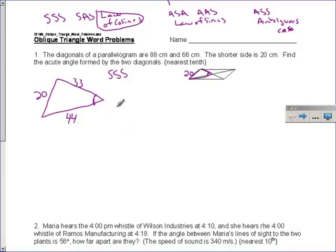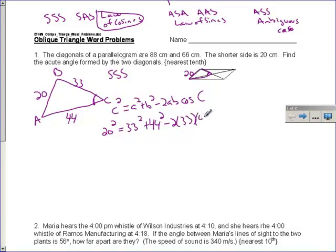Now, our givens are all three sides. So, this is clearly a side-side-side triangle. So, we are going to use the law of cosines to find this missing angle. So, I will set up my law of cosines equation, which is c squared equals a squared plus b squared minus 2ab cosine of angle c. And so, what I'm going to do here is I'm going to call this angle c, and I'll call this angle a, and I'll call this angle b. So, 20 will be side length c, and 33 will be side length a, and 44 will be side length b.